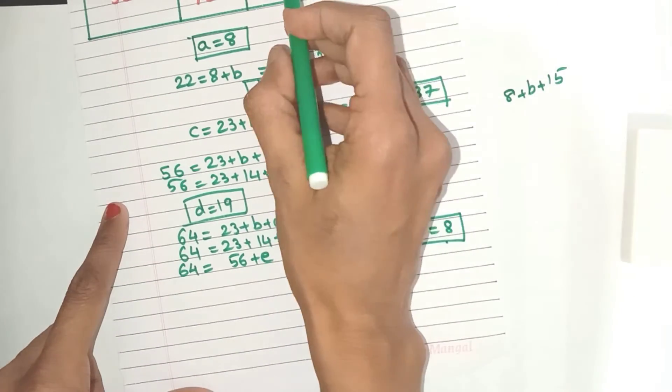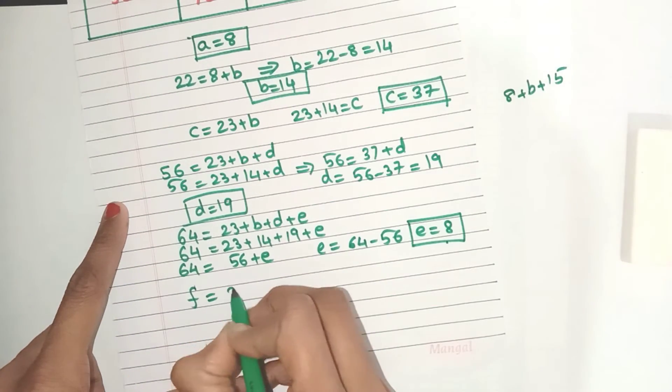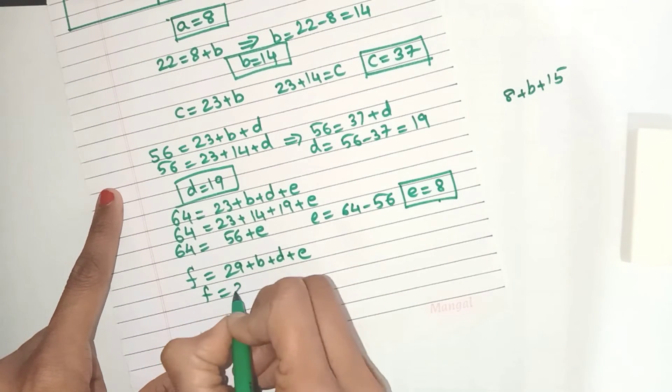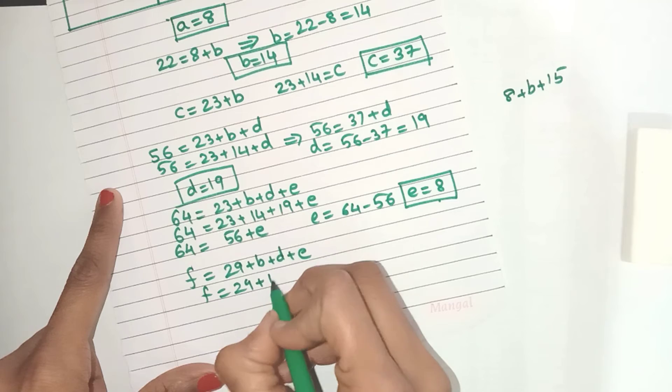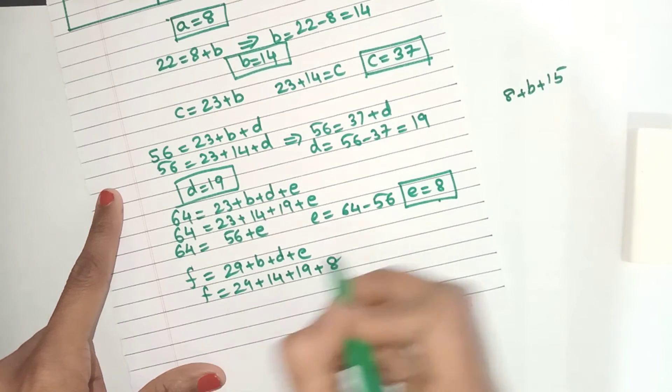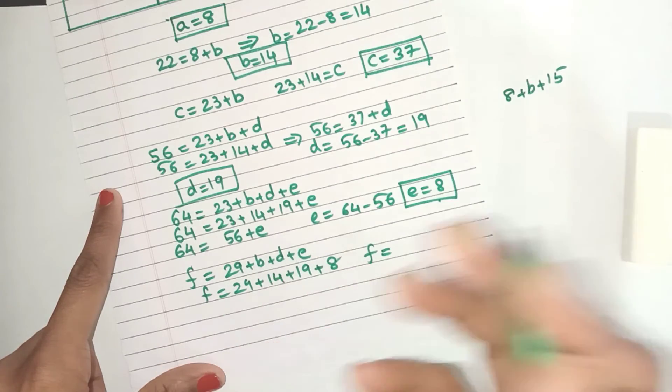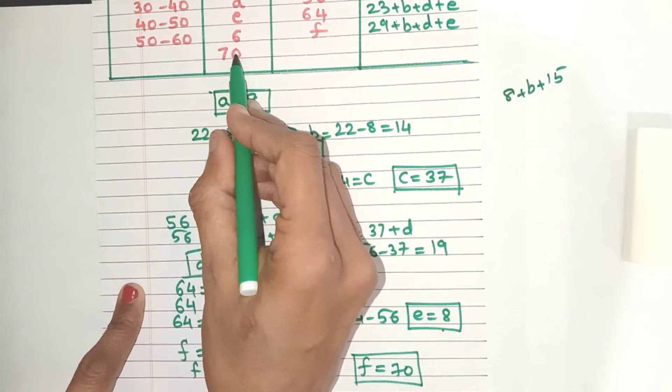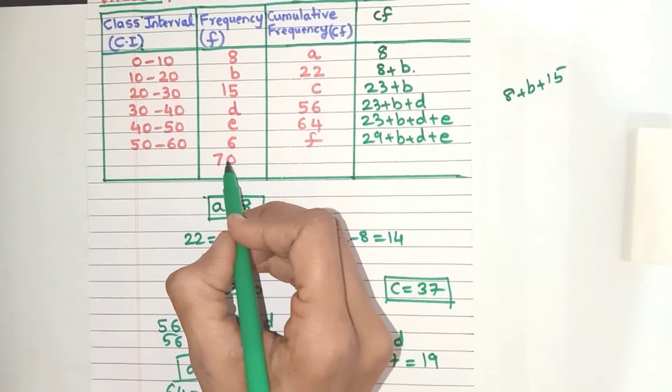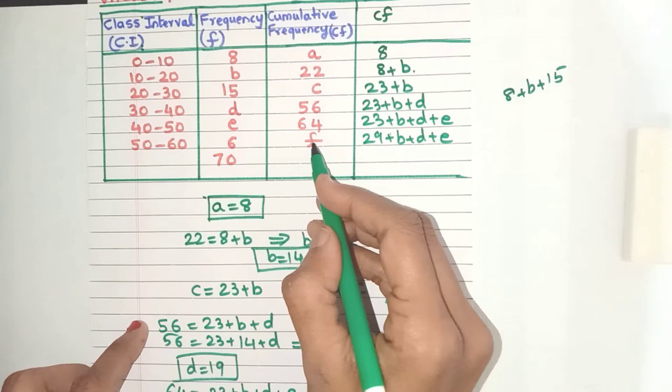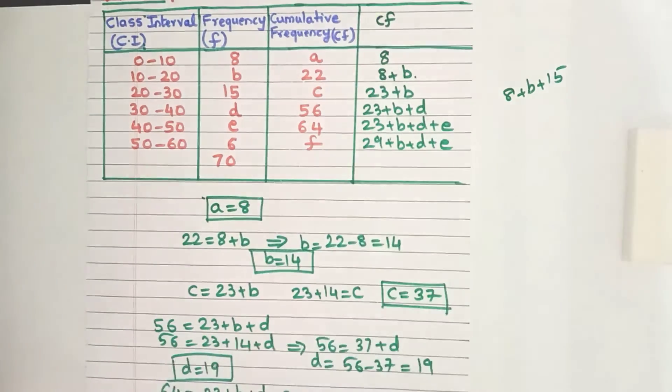Now the last one is F. F is equal to 29 plus B plus D plus E. But we already know B's value as 14, D is 19, and E also we know. When you add all this, it comes to 70, which is what we want because the total number of frequencies here is also 70, and the last CF entry will always be the same as the total number of frequencies.